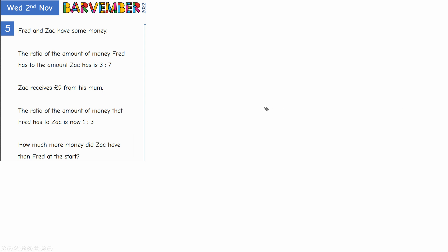Another Barvember maths problem here. Fred and Zach have some money. The ratio of the amount of money Fred has to the amount Zach has is three to seven. Zach receives nine pounds from his mum. The ratio of the amount of money that Fred has to Zach is now one to three. How much more money did Zach have than Fred at the start?